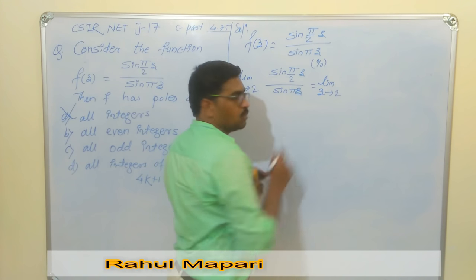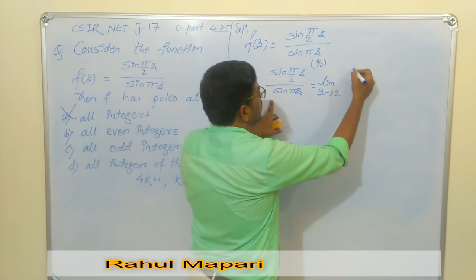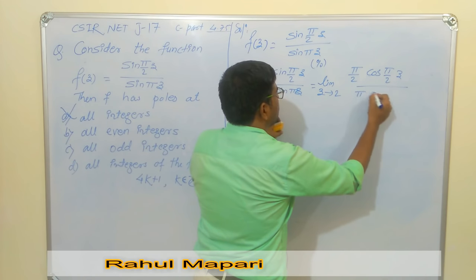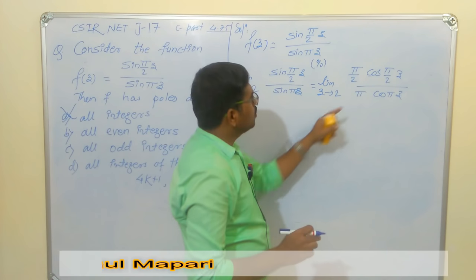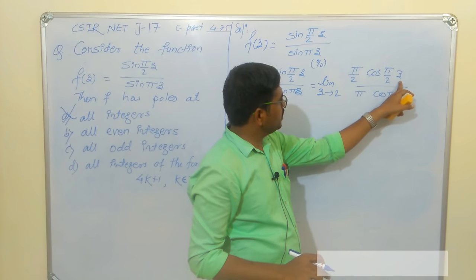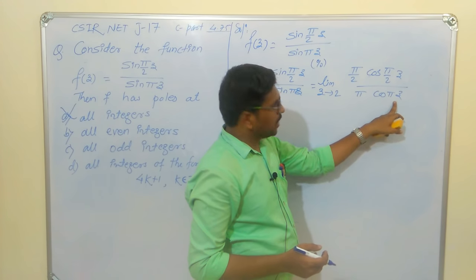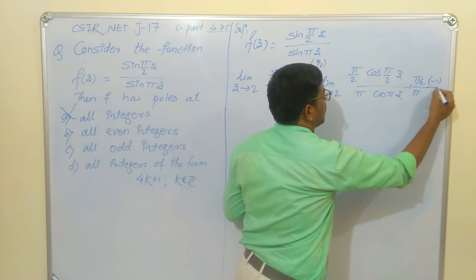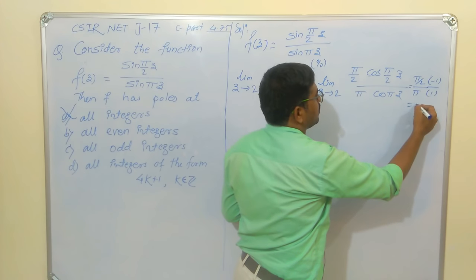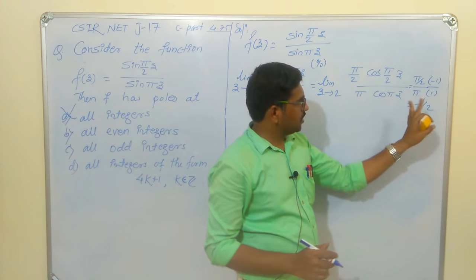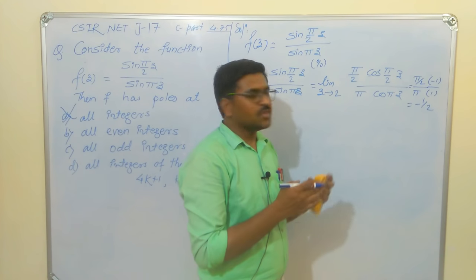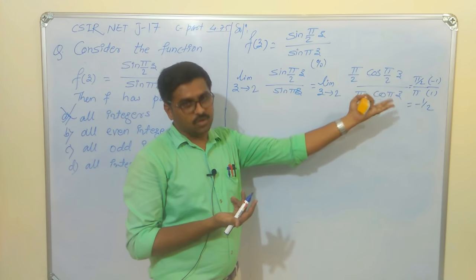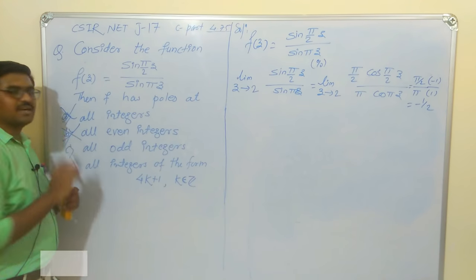Taking the limit as z tends to 2: cos(π) = −1 in the numerator and cos(2π) = 1 in the denominator, giving (π/2)(−1) / (π·1) = −1/2. The limit exists and is finite at z=2, so there is no pole at even integers. Therefore Option B is also discarded.